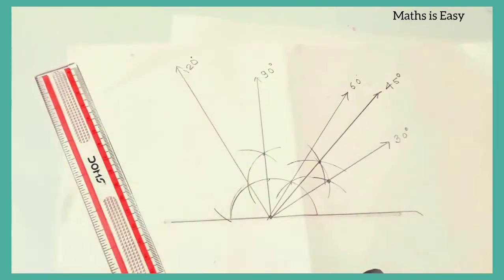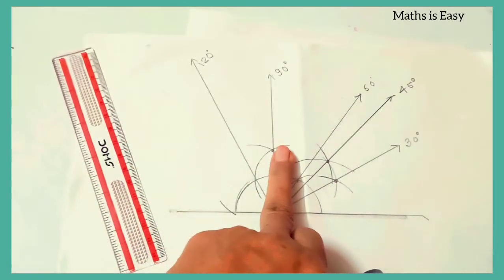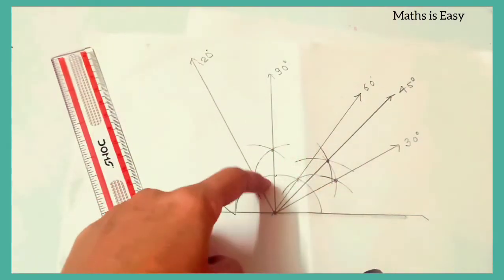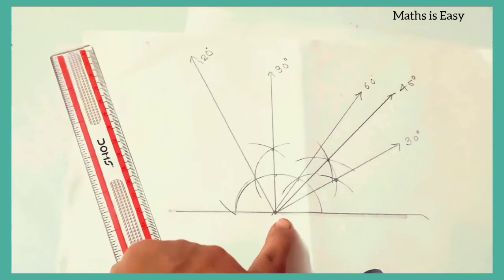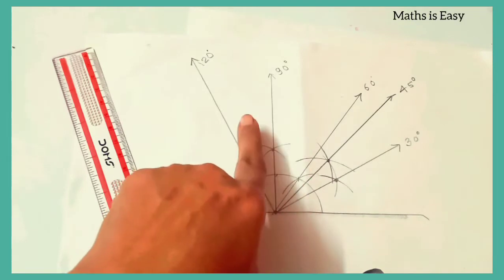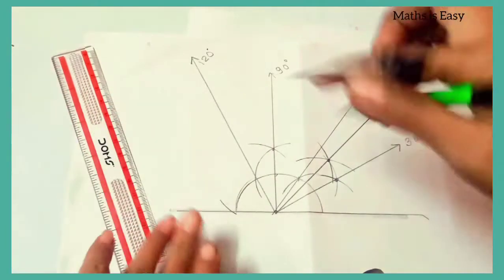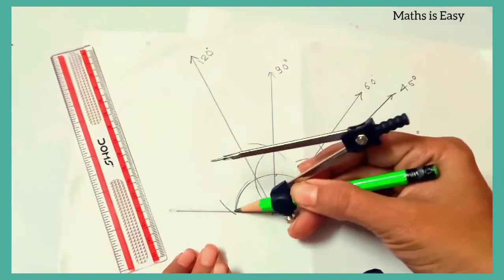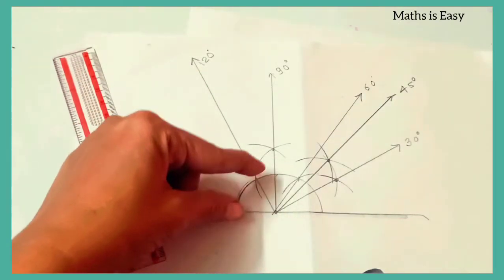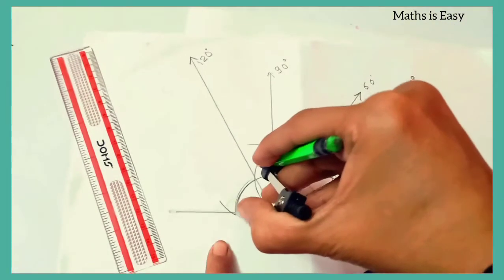Now we are going to draw 135 degrees. For 135 degrees, note that 90 plus 45 equals 135. The angle between 120 and 180 is 60 degrees; if we bisect that, we get 30. If we then bisect that 30 degree segment again, we can build toward 135 degrees using the bisection method.